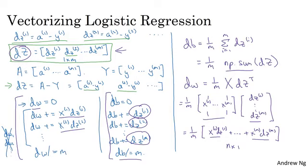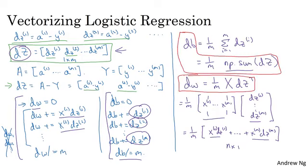So the vectorized implementation of the derivative calculations is just this. You use this line to implement db and use this line to implement dw. And notice that without a for loop over the training set, you can now compute the updates you want to your parameters.